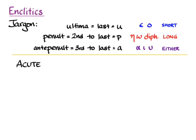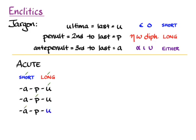We learned early on that acutes can be over either short or long syllables. They can appear on the last syllable, the ultima, the second to last, or the third to last, but they can only appear on the third to last syllable if the last syllable is short. We learned that graves appear on short or long syllables, but they only ever appear on the last syllable of a word when another word follows immediately — that is to say, when there's no pause afterwards.